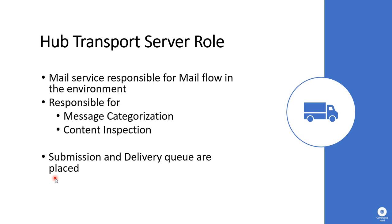The next server role is the Hub Transport Server role, which is responsible for email routing within your Exchange organization. It includes a categorizer that performs the important tasks of recipient resolution, content conversion, and email routing — determining whether an email is sent to an internal user or routed to an external user. This is decided with the help of accepted domains configured in the Exchange organization. Apart from the categorizer, there are submission queues and delivery queues on this server role, through which email is submitted, categorized, and then routed to internal users or out to the internet.